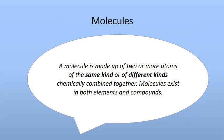Now we come to the other key term: molecules. Atoms combine together to form molecules. A molecule is made up of two or more atoms of the same kind or of different kinds. Atoms of the same kind — such as different carbon atoms — can combine to form a molecule; or atoms of different kinds, like carbon and oxygen, can combine together to form a molecule.